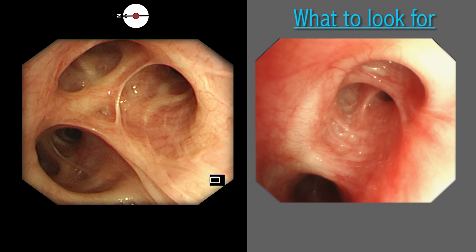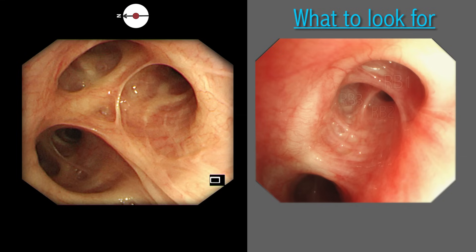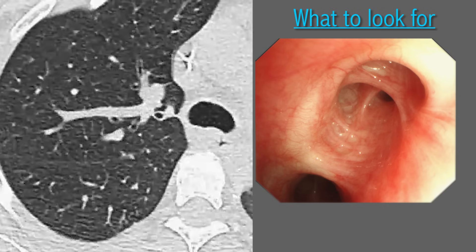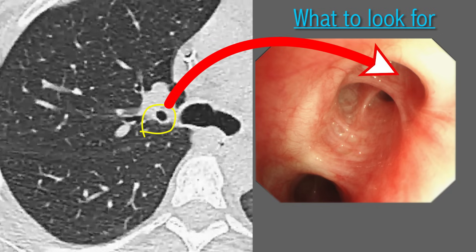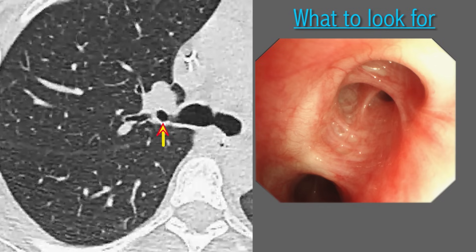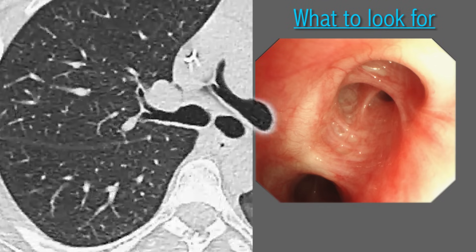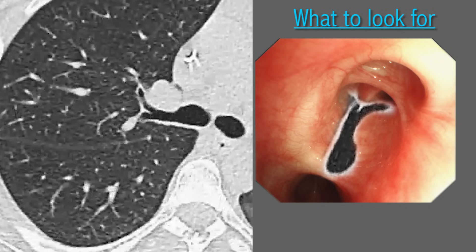Another common variant is two divisions that soon branch into three bronchi. In the example shown, the anterior and posterior segments share a common orifice. Identification of these abnormal orifices can be confusing, and I usually go back to scrutinize the CT scan to tally with the bronchoscopic findings. On the CT scan in this case, the upper lobe bronchus is seen foreshortened all the way down to its origin from the right main bronchus, and then the anterior and posterior bronchi are seen branching from a common stem.